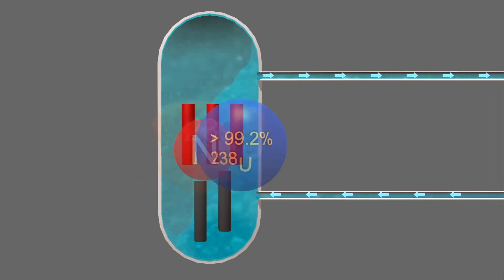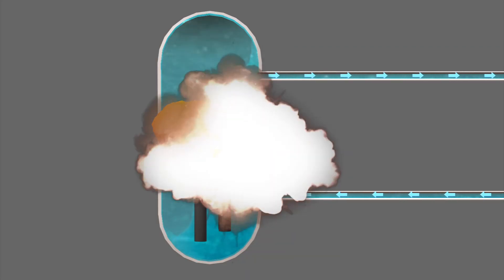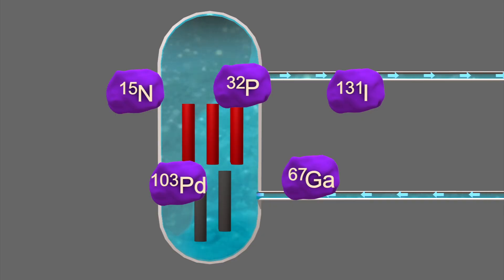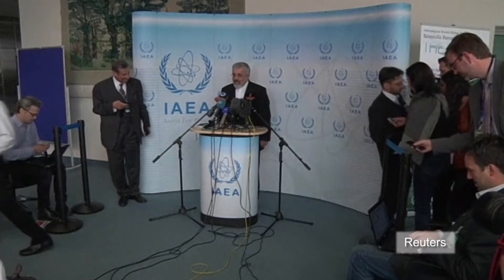The nuclear reaction produces plutonium and isotopes which have niche uses in medicine and agriculture. The plutonium can also be used for weapons. Israel, the United States, and others are suspicious of Iran's claims its nuclear program is intended for non-military purposes only.